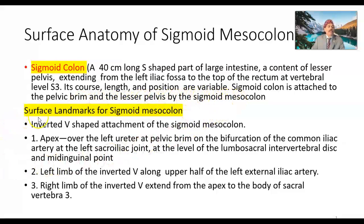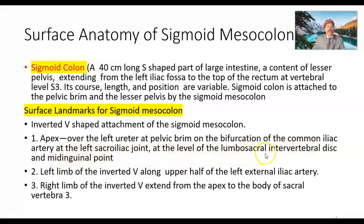Now we will go to the surface landmarks for the sigmoid mesocolon. The attachment of the sigmoid mesocolon is just like an inverted V shape. The apex of the V is over the left ureter at the left pelvic brim, on the bifurcation of the left common iliac artery, at the left sacroiliac joint, at the level of the lumbosacral intervertebral disc and the mid inguinal point.